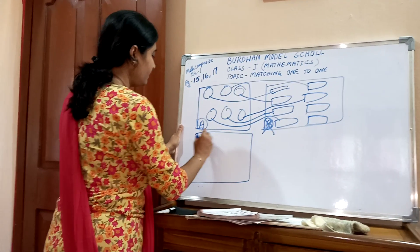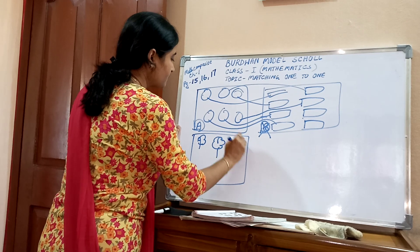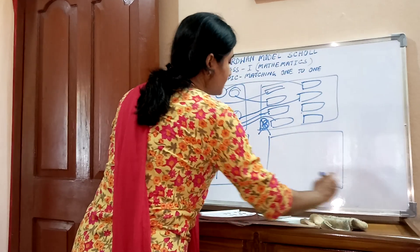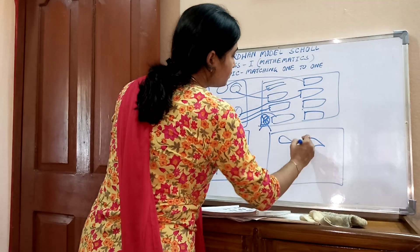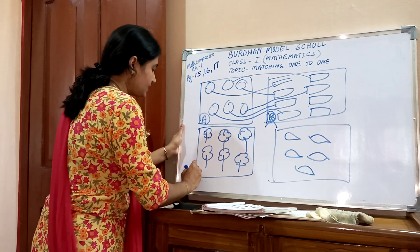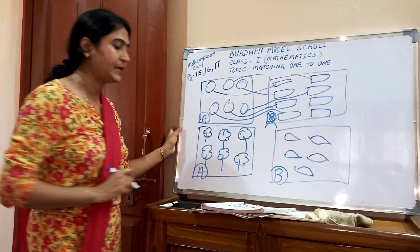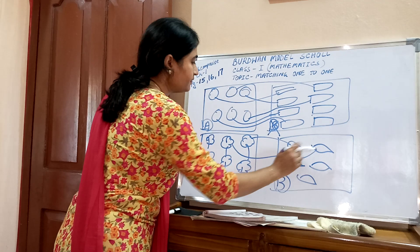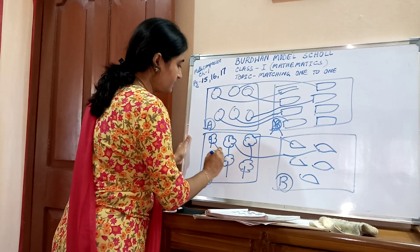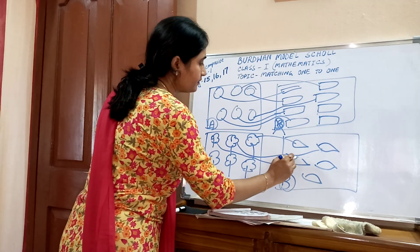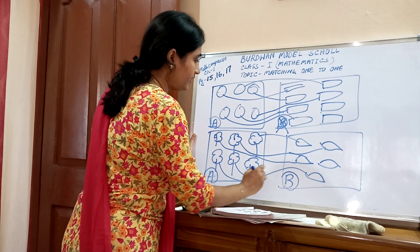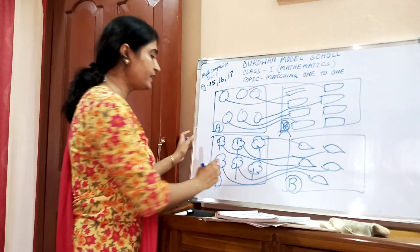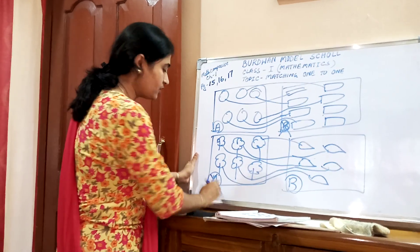Next: trees and leaves. Collection A has six trees and collection B has five leaves. Match: one tree, one leaf; one tree, one leaf; one tree, one leaf; one tree, one leaf; one tree, one leaf. But one tree is extra — one tree is more. Which is more? Tree. So cross A.